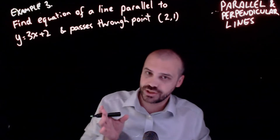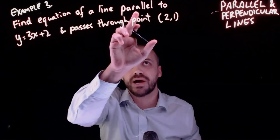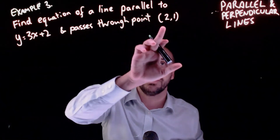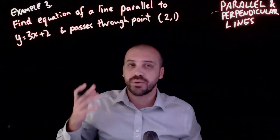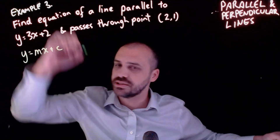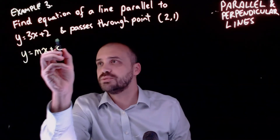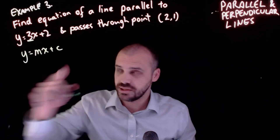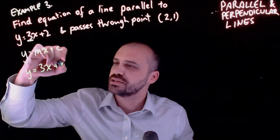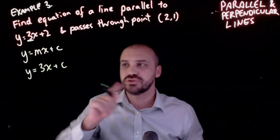A very different style of question, but the same idea about parallel lines. Find the equation of a line that is parallel to y equals 3x plus 2 and passes through the point (2, 1). We want to find the equation of a line - all lines are y equals mx plus c. Since it's parallel to y equals 3x plus 2, it has the same gradient, so we know it's y equals 3x plus c. We don't know the c value, but we know it passes through (2, 1).